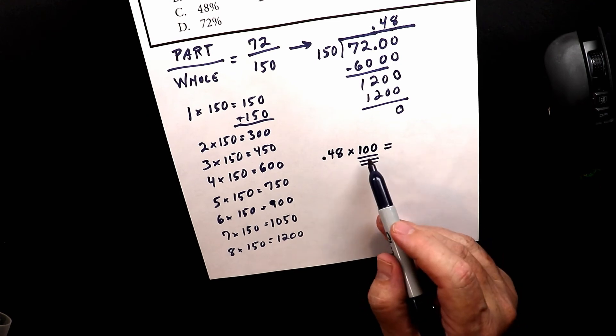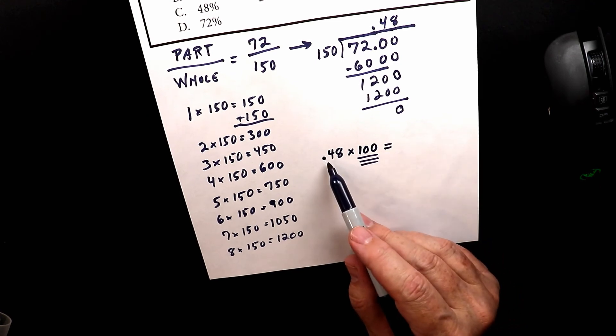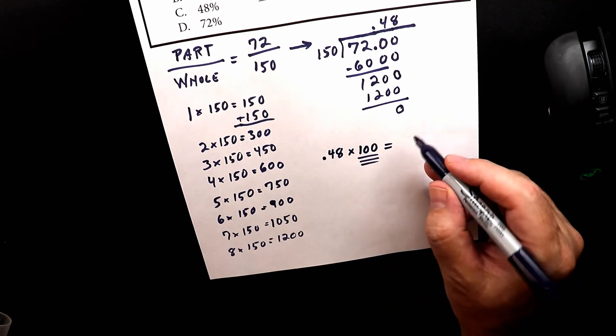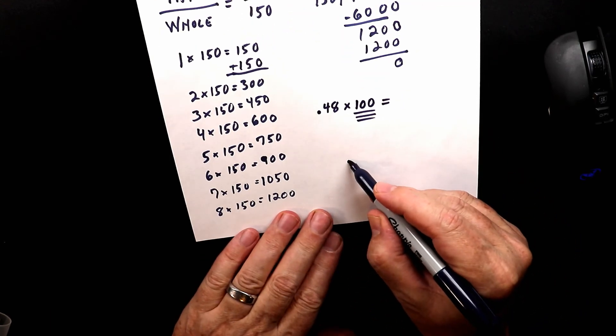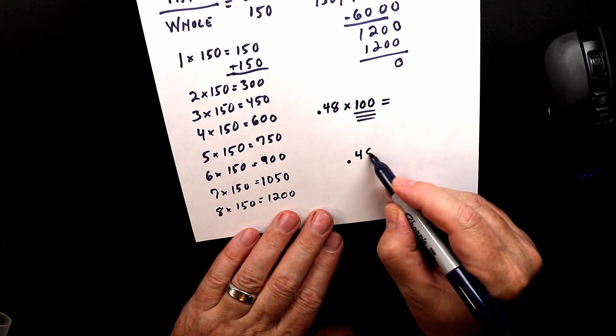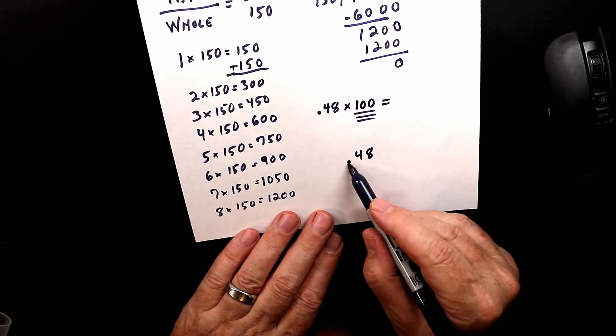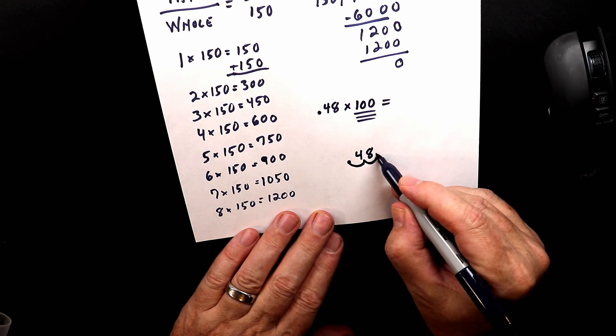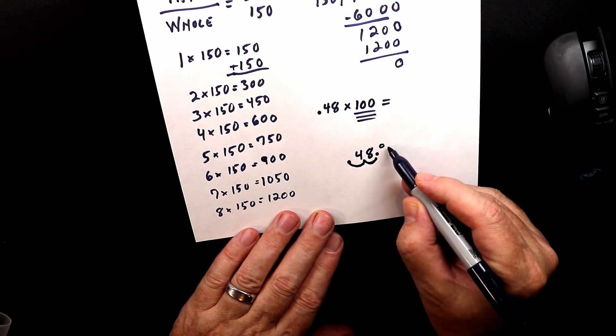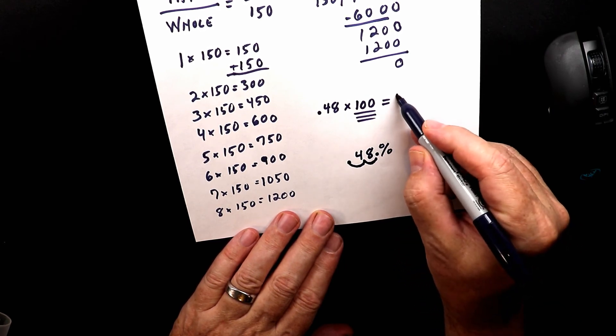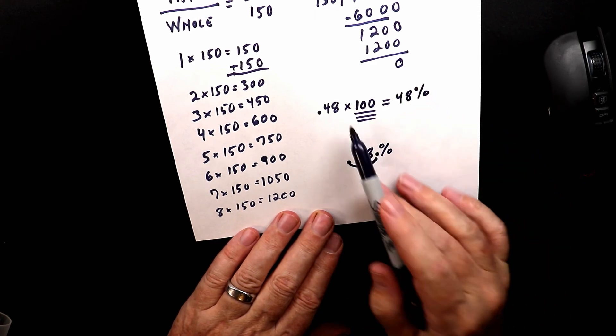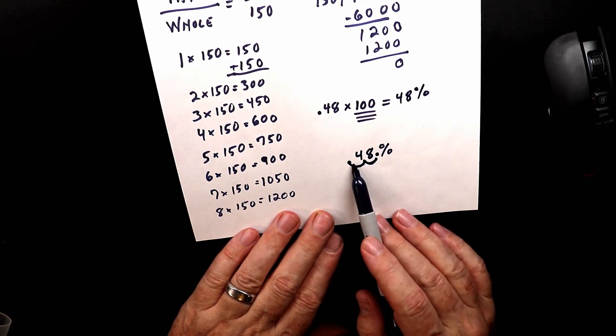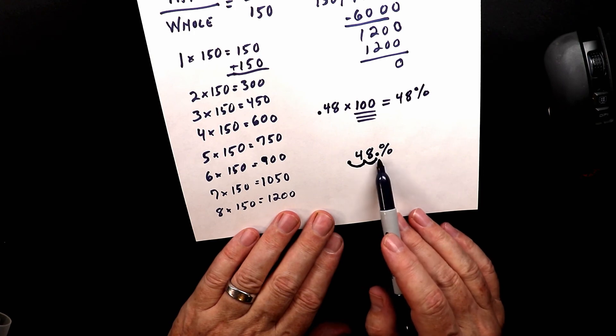Now, multiplying by 100 is moving the decimal place over two spaces. So we take the 0.48 here. I'll do it big over here. 0.48. And I move it over 1, 2. Boom. So now that's the percentage because we go to 48. And when you multiply by 100, you move the decimal place over two spots. That's it.